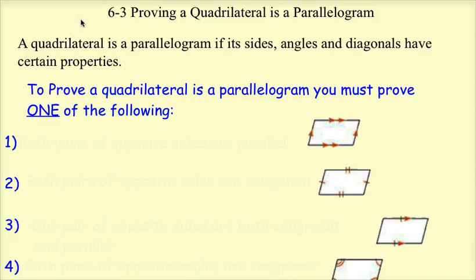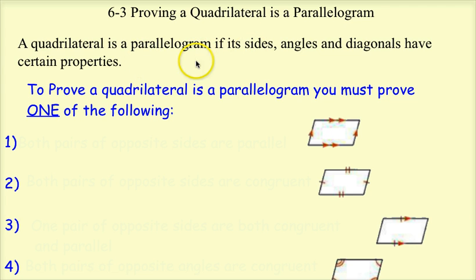This is Lesson 6-3, Proving a Quadrilateral is a Parallelogram. Yesterday we discussed the properties of a parallelogram, but now I actually want to prove that a quadrilateral is a parallelogram. A quadrilateral is a parallelogram if its sides, angles, and diagonals have certain properties.